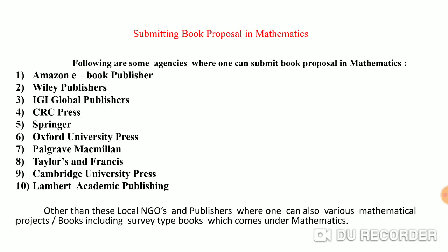Coming to the next point: if you want to submit a book proposal in mathematics, there are lots of standard, reputable, worldwide-known agencies like Amazon for e-books, Philly Publishers, IGI Global Publishers, CRC Press, Springer, Oxford University Press, Taylor and Francis, Cambridge University Press, and Lambert Academic Publishing. There are also local publishers and NGOs where one can publish various mathematical books, including survey-type books which fall under mathematics.